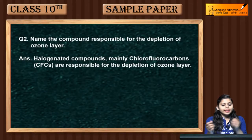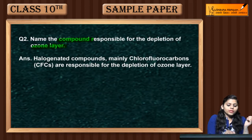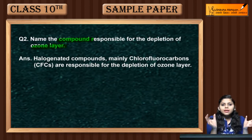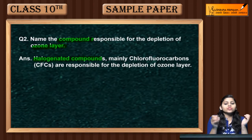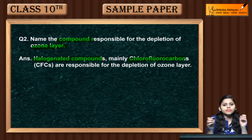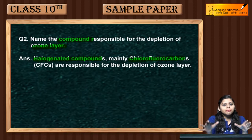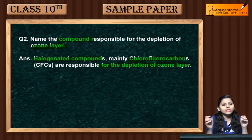Question number 2: Name the compound responsible for the depletion of the ozone layer. The answer is halogenated compounds. Halogen-containing compounds like chlorofluorocarbons (CFCs) are responsible for the depletion of the ozone layer.